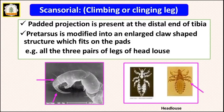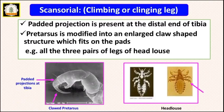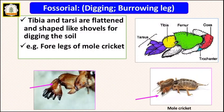The next modification is scansorial legs, which are the climbing or clinging legs. This type of leg has padded projections at the distal end of the tibia, and the pretarsus is claw-shaped, fitting into the pads, which helps the insect for climbing or clinging. For example, all three pairs of legs of the head louse are scansorial or clinging legs — that's why they cling into the hairs of human beings.